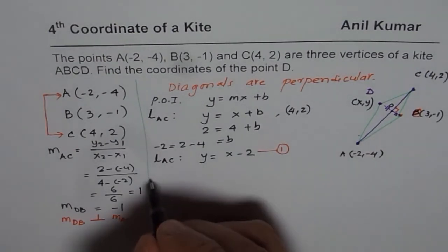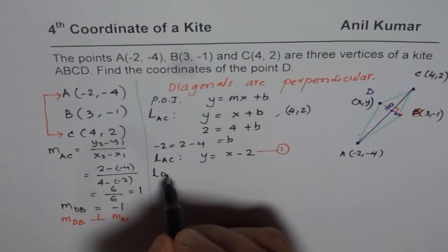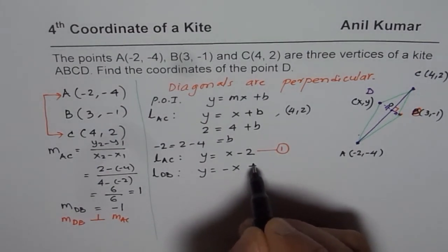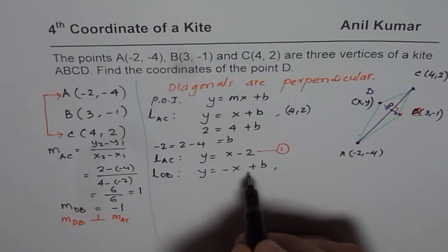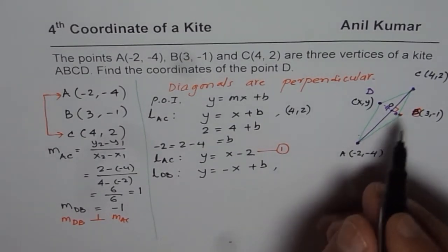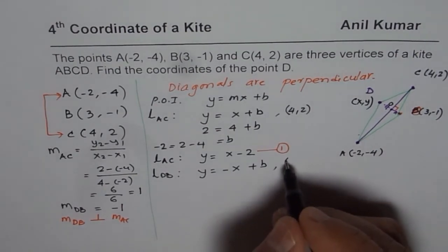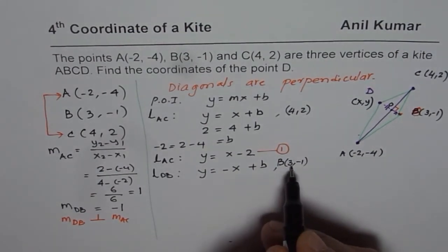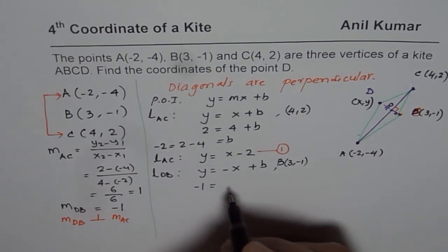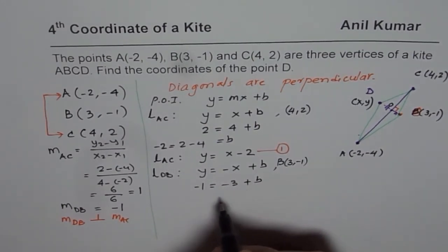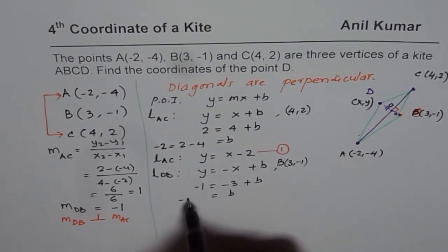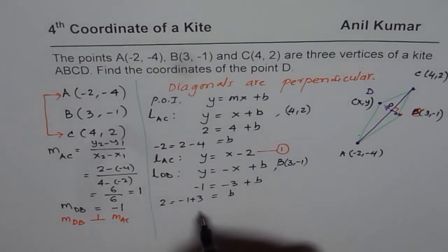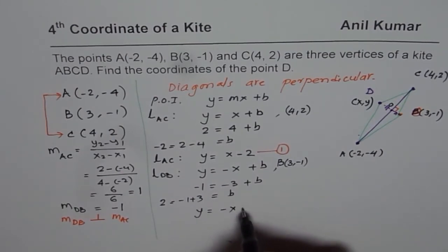Now let's find the equation of line DB. Since the slope is -1, we write Y = -X + B. We substitute the coordinates of point B, which is (3, -1): -1 = -3 + B, so B = -1 + 3 = 2. The equation of line DB is Y = -X + 2. Call this Equation 2.